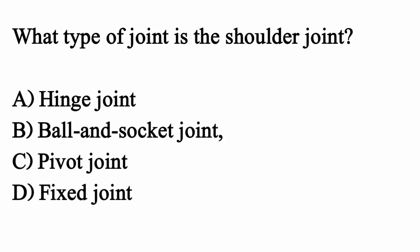Which type of joint is the shoulder joint? The correct option is option B: ball and socket joint.